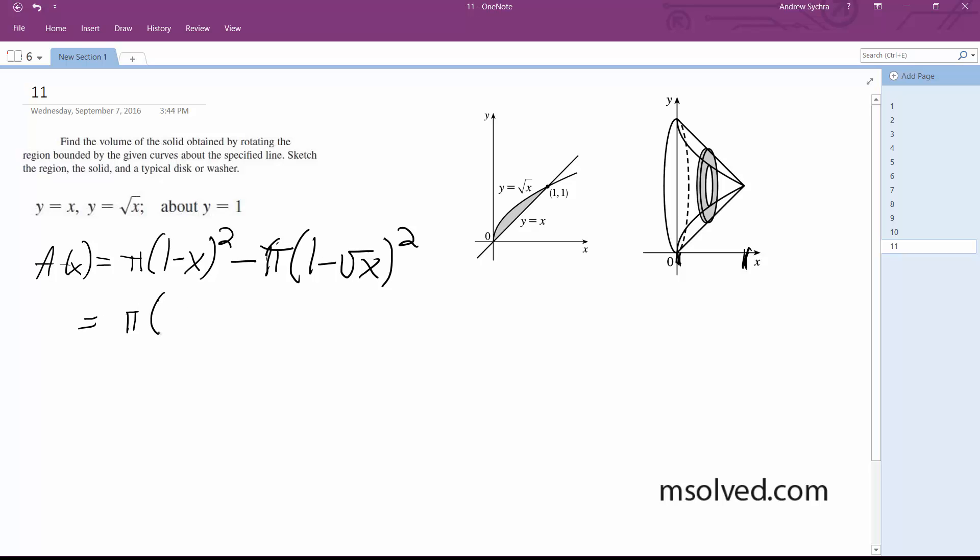After calculating all this, I get pi times negative 3x plus x squared plus 2 square root of x.